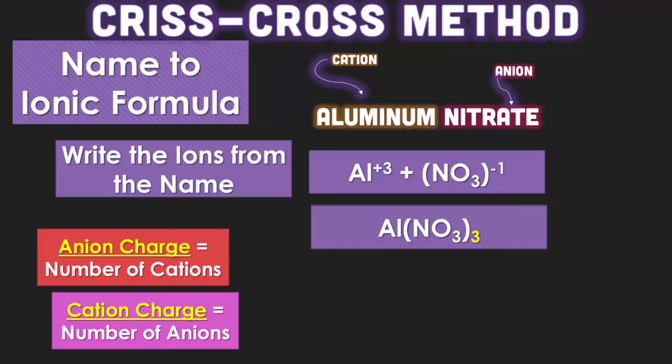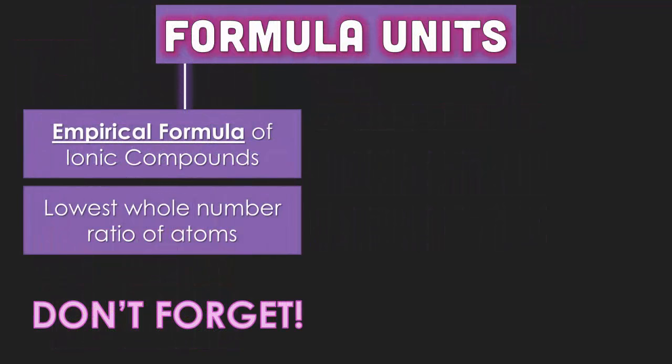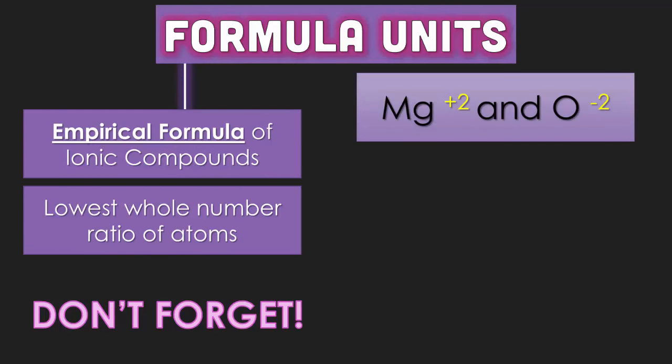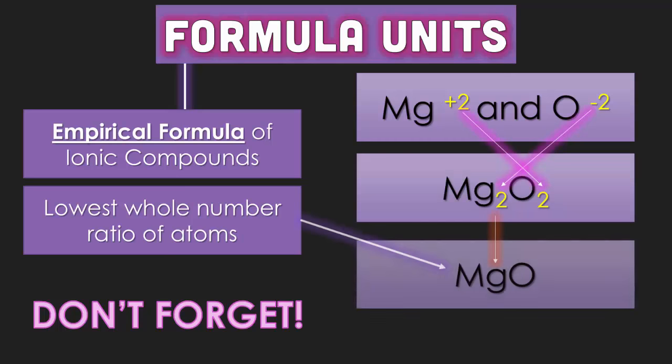Once you write out the ions, put the charges as the number of the opposite ion. So again, formula units, something we've recently talked about, you have to make sure that your compounds are in the lowest ratio. If it's a 2 to 2 ratio like we see here, it has to be simplified to a 1 to 1.